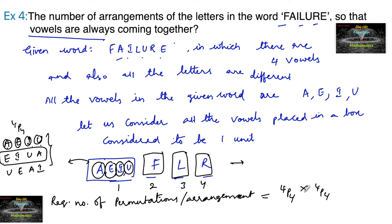So we are using multiplication principle. So 4P4 into 4P4, that is four factorial into four factorial. Four factorial is twenty-four. Twenty-four into twenty-four, which is five hundred and seventy-six. So 576 is the answer.